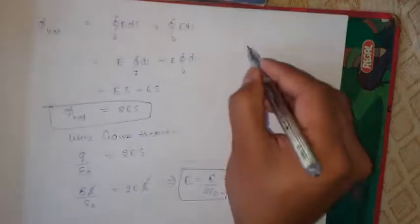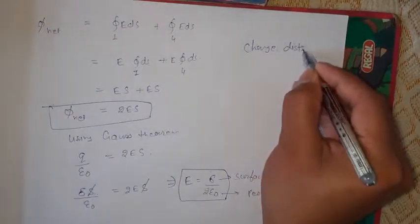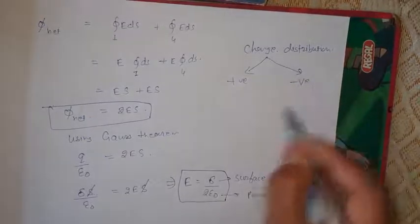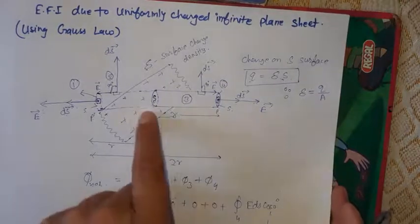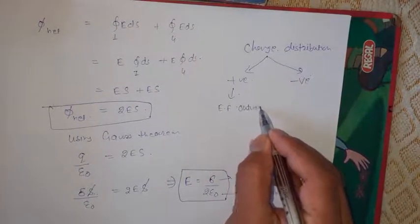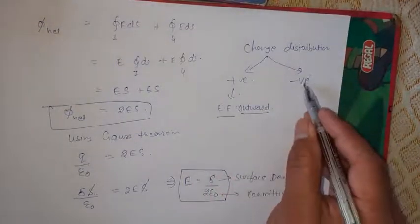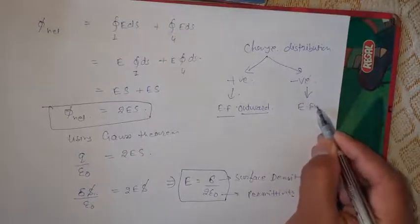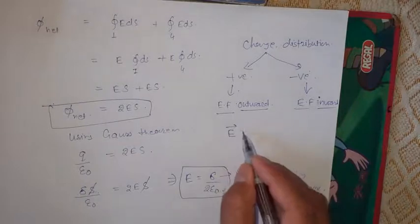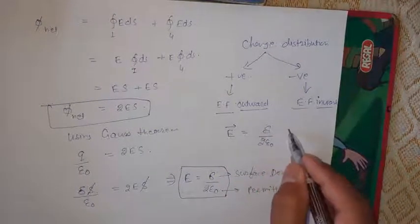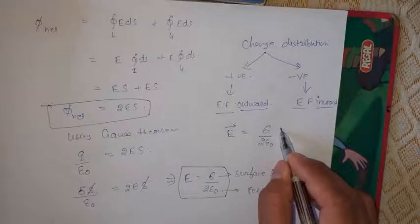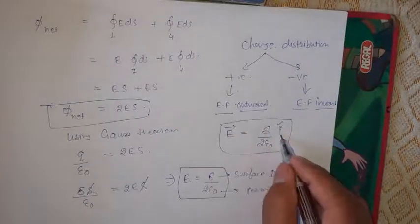Next, students, an important point about charge distribution: there are two types. On a thin plane sheet, if the charge is positive, the electric field will be outward. If the charge is negative, then the field will be inward. In vector form, if we take the right side as the x-axis direction, the unit vector shows the x-axis, and we can write the electric field accordingly.